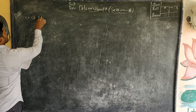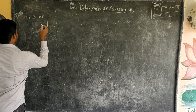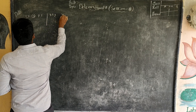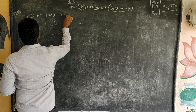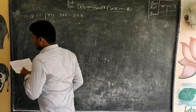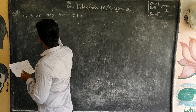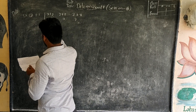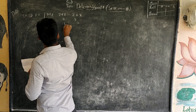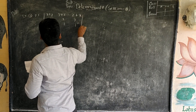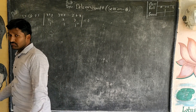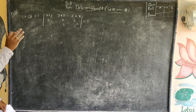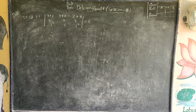Prove that the determinant of (x+y, y+z, z+x / z, x, y / 1, 1, 1) is equal to 0. Without expanding, we need to prove that the value is 0.